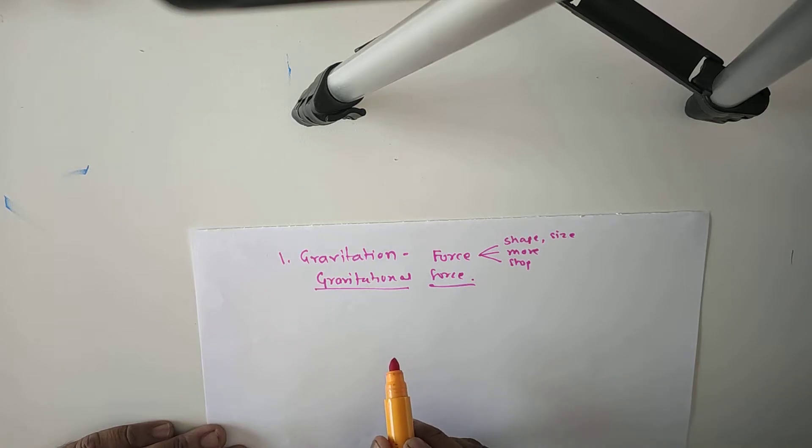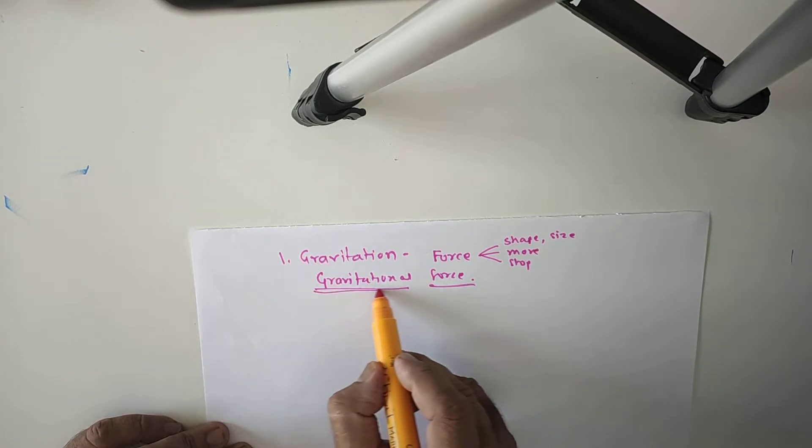Gravitational force is a universal force and it acts not only between two objects on the earth but also between two objects in the universe. What is the meaning of this definition of gravitational force?